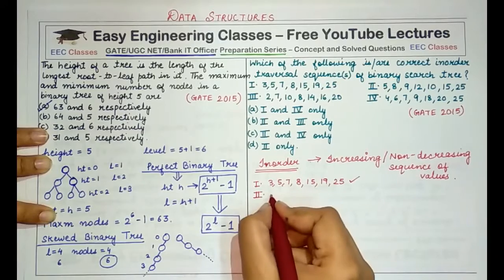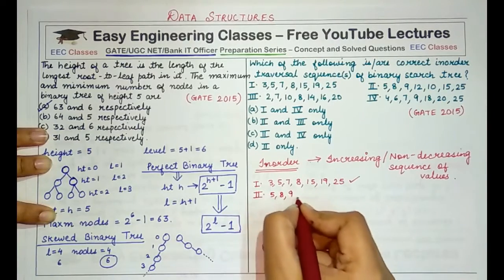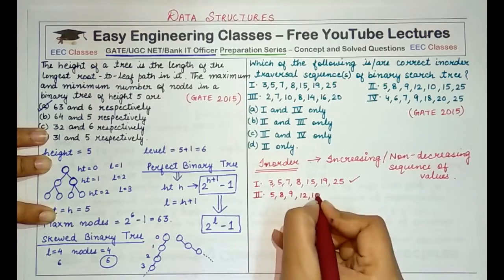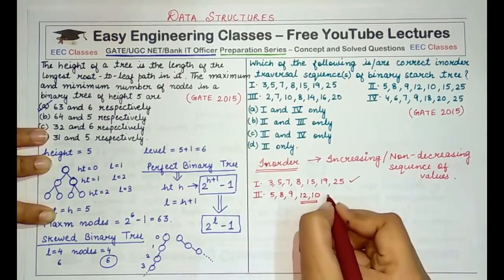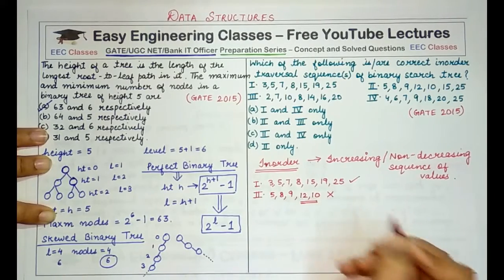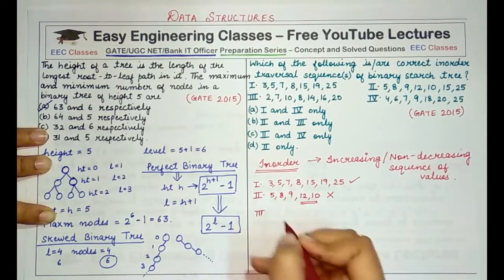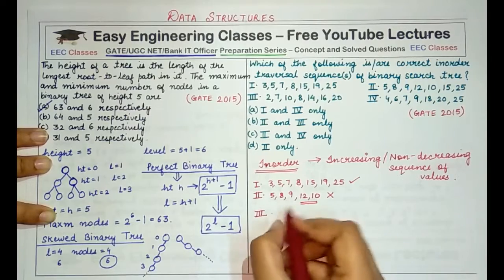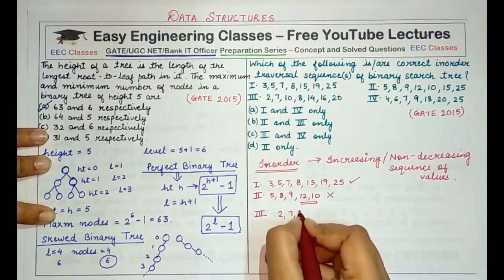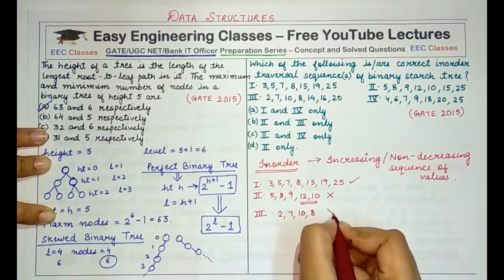Coming to the second one: 5, 8, 9, 12, and 10. You can stop here because this is not in increasing order, therefore it is not a correct in-order traversal sequence. Coming to the third one: 2, 7, 10, 8 — this is also incorrect.